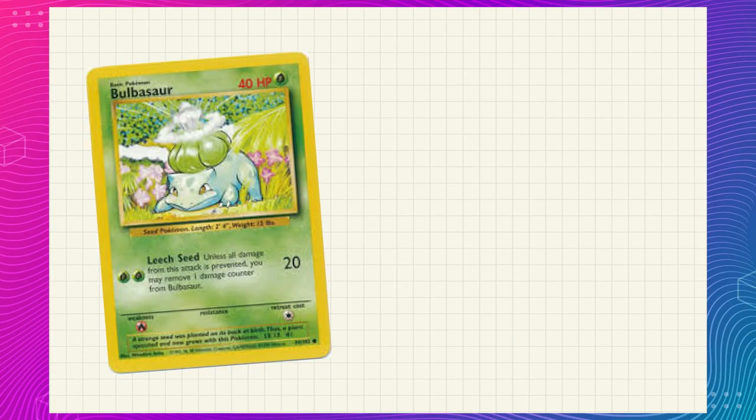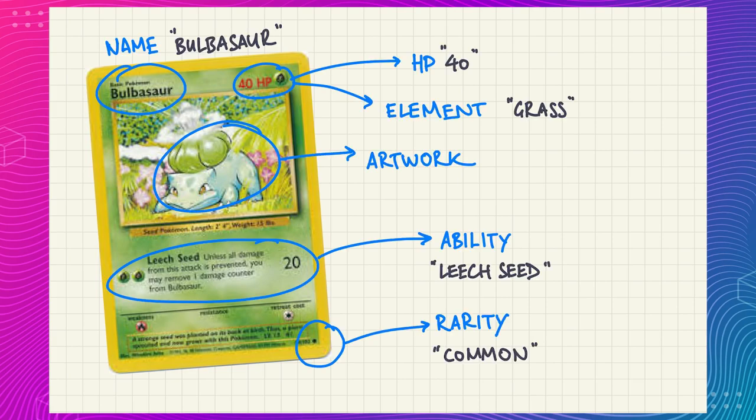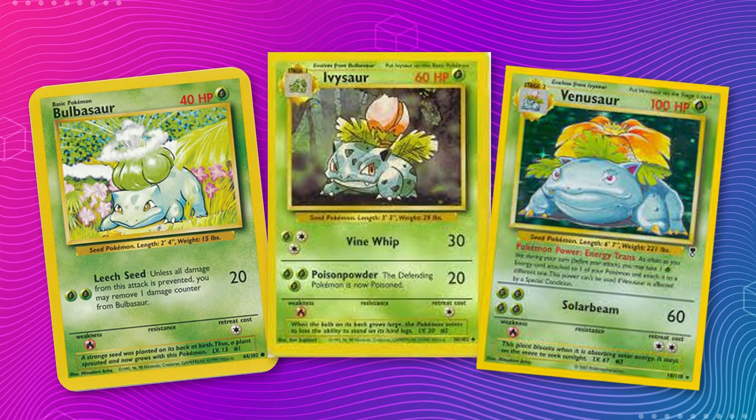Now let's take a look at the design. When it comes to software design, I find the best place to start is with the problem we're trying to solve. Here's an example of a real Pokemon card published in 1996. Take note of the key elements we want to reproduce: the HP of the Pokemon, its abilities, the name, the element, the artwork, the rarity, and evolved forms. I want my program to make me a collection of 100 cards just like these.